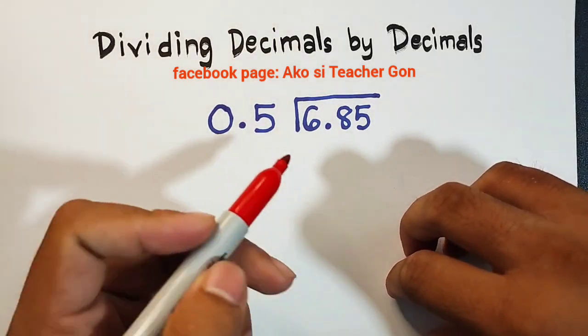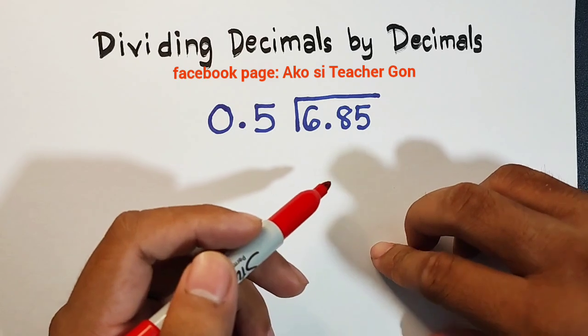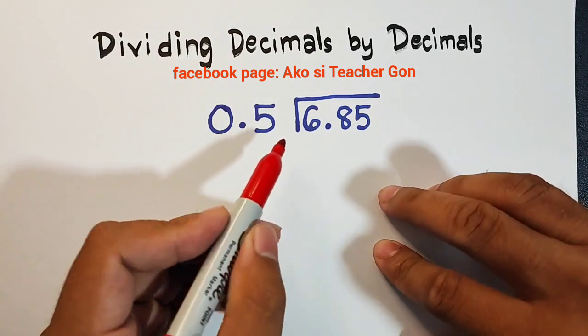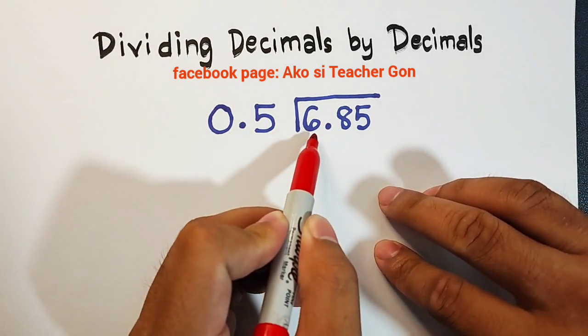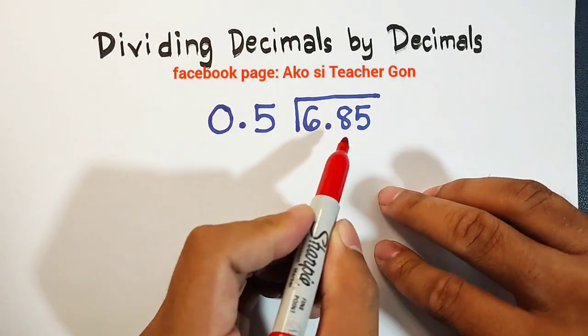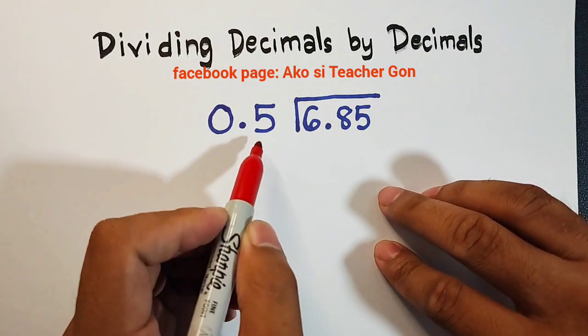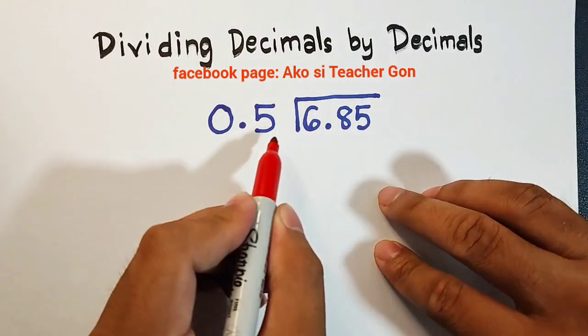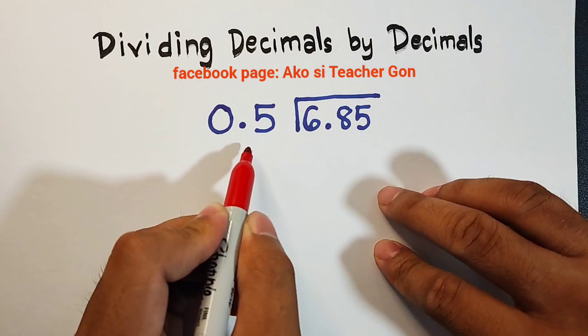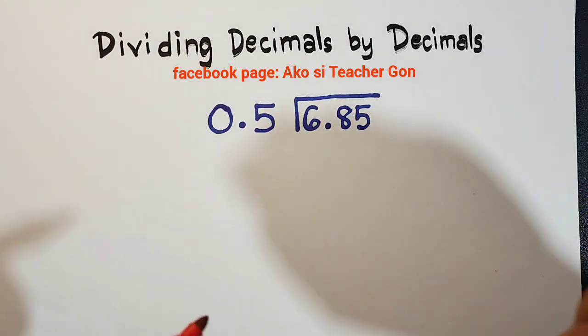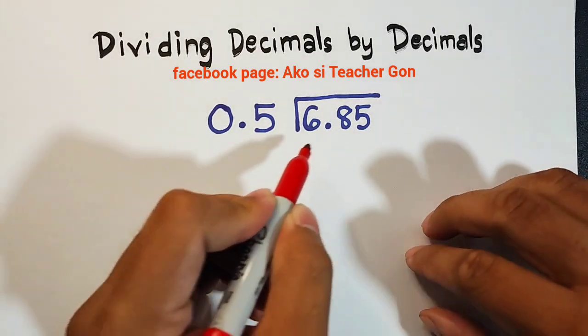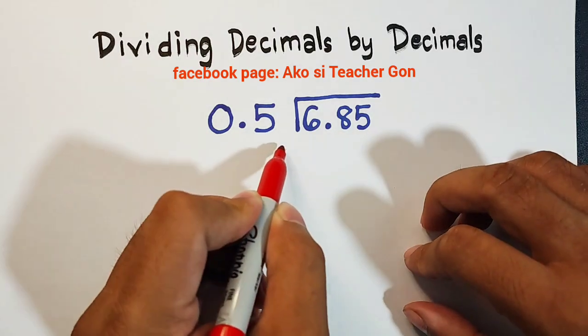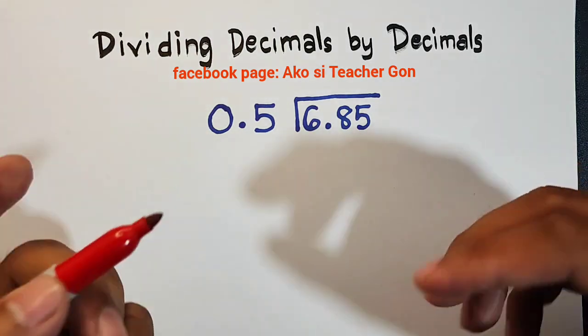We have here our first given example on how to divide decimals by another decimal. We have here 6.85 divided by 0.5. So this one is your dividend and this is your divisor. The question here is how are we going to divide this decimal by this decimal? So let's try.